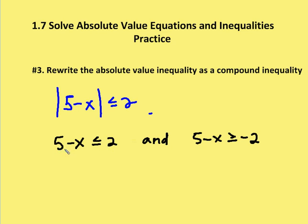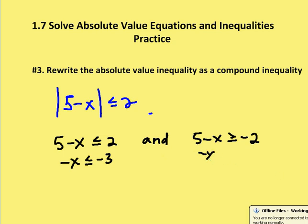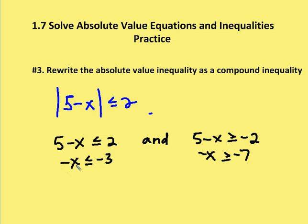I'm going to subtract 5 from the left-hand side in both of these. So I have negative x is less than or equal to negative 3 in this case, and negative x is greater than or equal to negative 7. Now I run into the problem where I have a negative coefficient for the variable in the inequality. I'm going to have to divide by negative 1. When I do that, I'm going to change the direction of the symbol. So dividing by negative 1, I end up with x, and I change the direction of the inequality: x is greater than or equal to 3 (since negative 3 divided by negative 1 is 3).